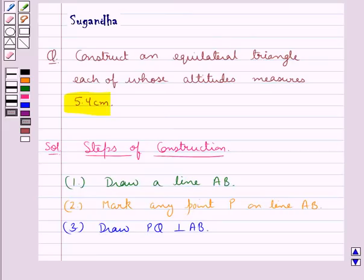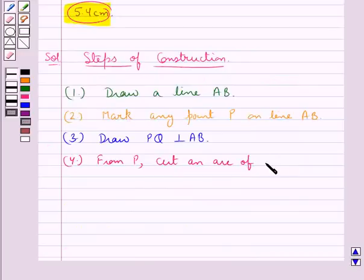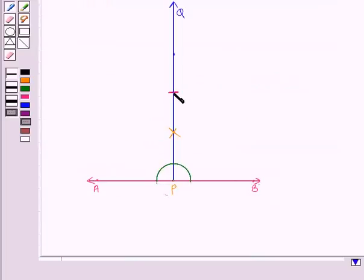Now in the question we have that the equilateral triangle has altitude of length 5.4 centimeters. So in the next step from the point P we cut an arc of measure 5.4 centimeters on PQ. Let this point be point C where this PC is of measure 5.4 centimeters.